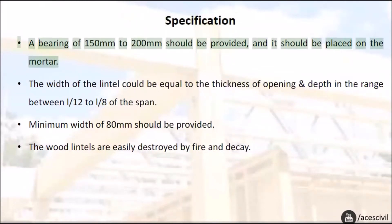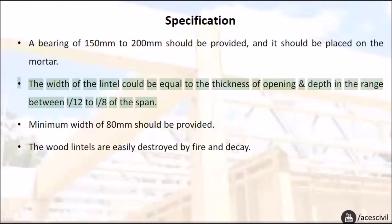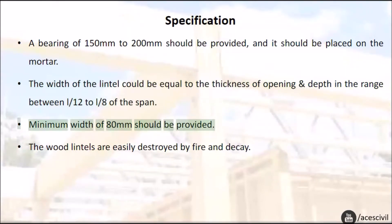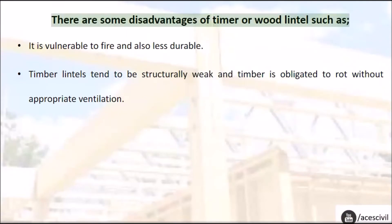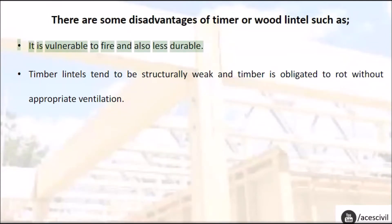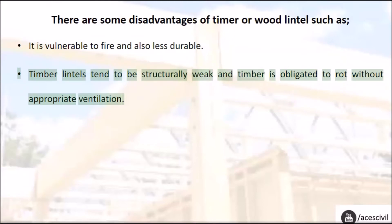Specification: A bearing of 150 mm to 200 mm should be provided and it should be placed on mortar. The width of the lintel could be equal to the thickness of the opening, and depth in the range between L/12 to L/8 of the span. Minimum width of 80 mm should be provided. The wood lintels are easily destroyed by fire and decay. They are vulnerable to fire, less durable, structurally weak, and timber is obligated to rot without appropriate ventilation.